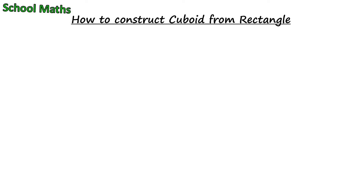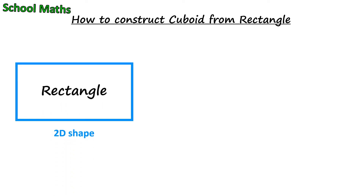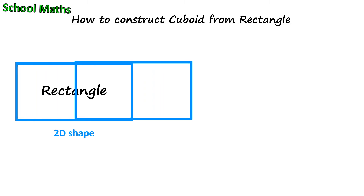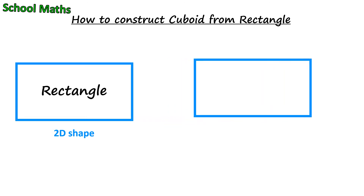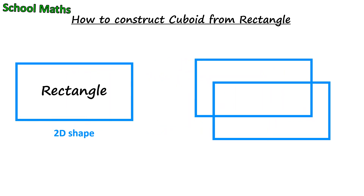This shape is a rectangle. It is a 2D shape. To draw cuboids, we need 2 rectangles and 4 slanting lines.